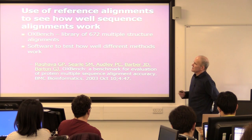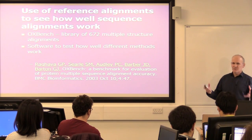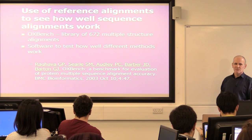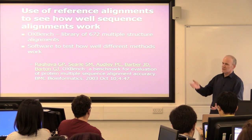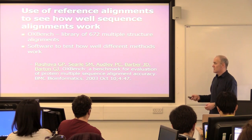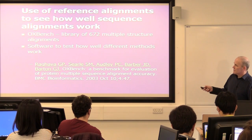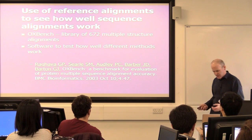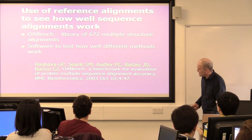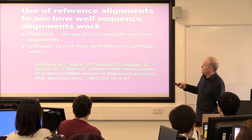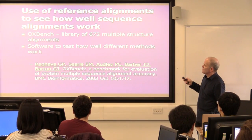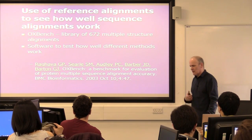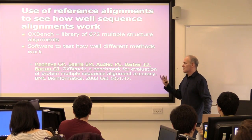One of the things you can do is create reference alignments using structure comparison. I showed you the SH2 domains, and you can compare alignments generated from sequence to alignments you get from structure. This is something we did in my group some years ago. We created something called Oxbench — because I was in Oxford at the time — which is a library of 672 multiple alignments derived from structure.